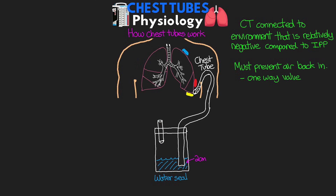However, this one-bottle system doesn't work so well if there's any drainage. If drainage comes out, it's going to increase the level of the water, increasing the hydrostatic pressure that must be overcome for the system to drain. If that hydrostatic pressure builds up and becomes greater than the intrapleural pressure, the evacuation is going to stop. And if air, blood, and fluid remain in the intrapleural space, the negative pressure is not going to be restored and the lungs are not going to fully expand.